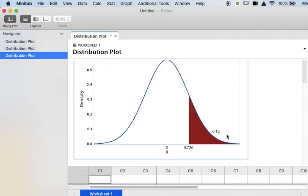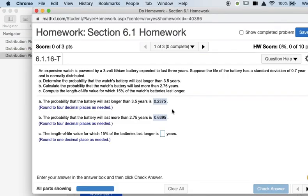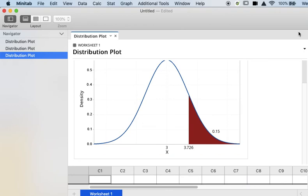And looking at my graph, I see 0.15 is the shaded area, which is what I wanted. I want to find the value on the X axis. That's going to be where my answer is, so 3.726 is going to be my answer in this case. Now they're asking me to round to one decimal place, so I would round this to 3.7.